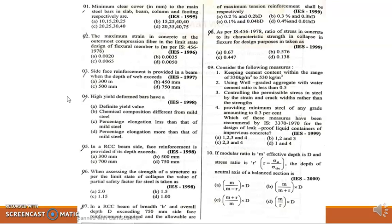Moving to the next question: If modular ratio is M, effective depth is D, stress ratio is R where R equals ratio of sigma ST to sigma C, the depth of neutral axis of a balanced section is. We have to consider the cracked transformed section in the case of working stress method.